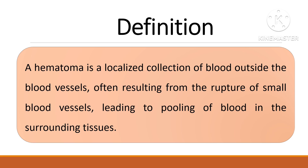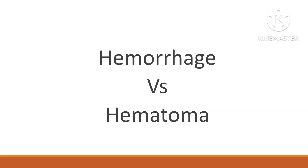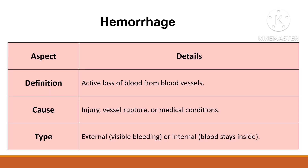Hemorrhage and hematoma are both conditions involving bleeding, but they differ in their nature and presentation. Understanding these differences is very important. Hemorrhage refers to the escape of blood from the blood vessels into the surrounding tissue, which can occur internally or externally.